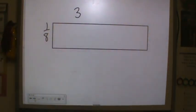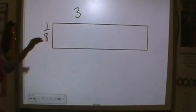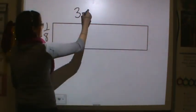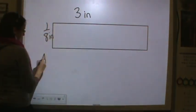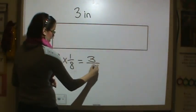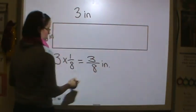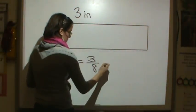So let's try this. I have a rectangle that is 3 by 1/8 and we're going to say that it's in inches. Okay, to find the area I would do 3 times 1/8. That would be equal to 3/8 of an inch. Actually, it'd be square inches, right, because it's area.